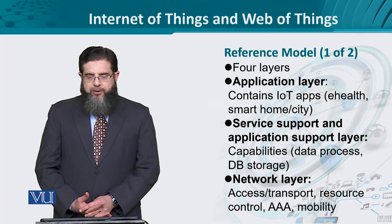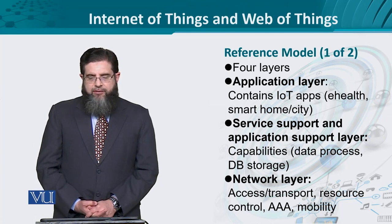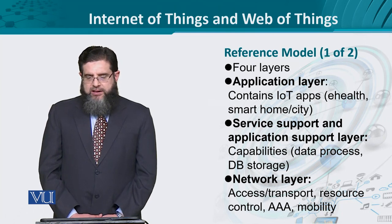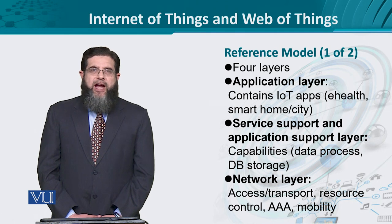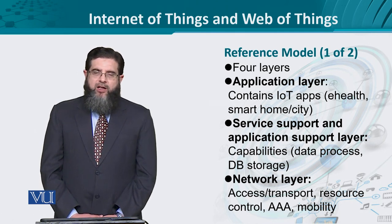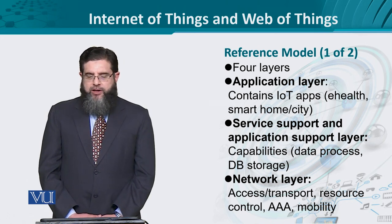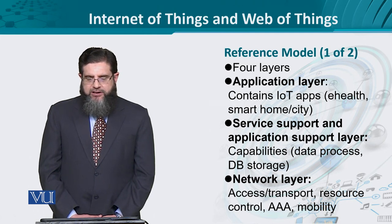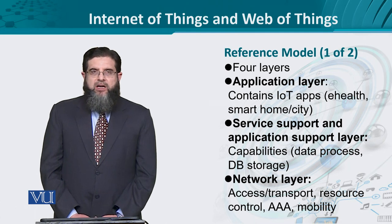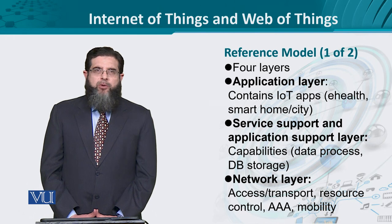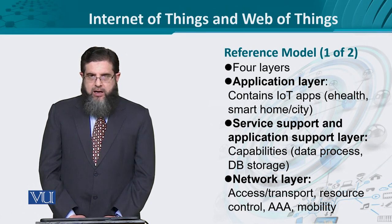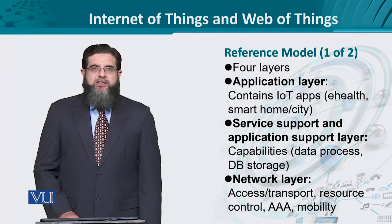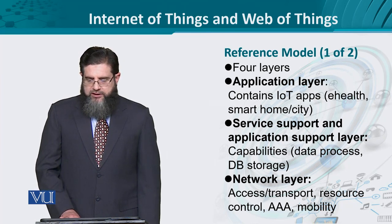The relationship between Internet of Things and Web of Things is referenced through four layers. We have the application layer that contains the IoT applications. If these applications are working on their own in a proprietary setting, it is IoT; but if published on HTTP, it becomes WoT. At the second layer, we have the service support and application support layer, which provides the underlying infrastructure for data processing, storage, retrieval, reading, and transmission. Then we have the network layer, which includes transport and access technologies, resource and admission control, authentication, authorization, access mechanisms, and mobility management.